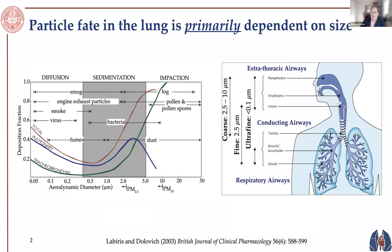Particle deposition in the lung is dependent on many factors, but the leading-order factor is size. Depending on size, particles can deposit in the extra-thoracic airways, the conducting airways, or the deep lung. Very small nano-sized particles — such as smoke and engine exhaust — deposit in the deep lung, while larger particles between one and five microns deposit in the central airways. Particles that don't deposit can be exhaled back into the environment, so we leverage breathing patterns or particle physics to keep them in the lung.